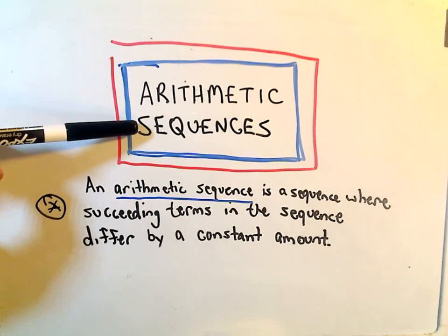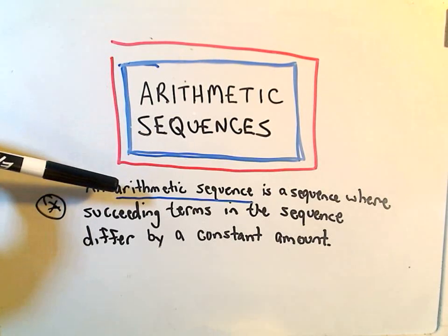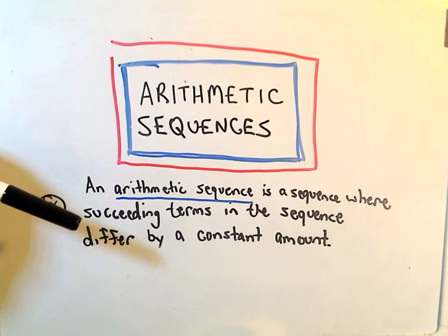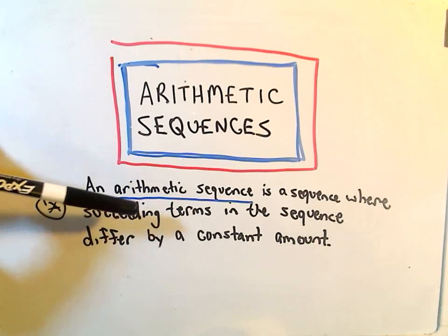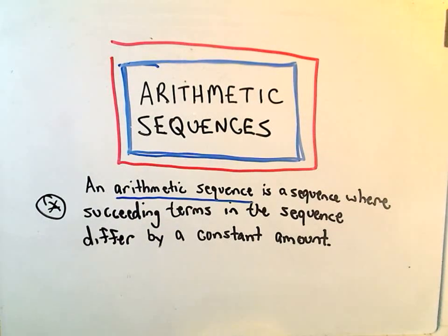A regular, just a plain old sequence doesn't have to have any pattern at all to the numbers that appear. But an arithmetic sequence is going to be a sequence where succeeding terms in the sequence differ by a constant amount.